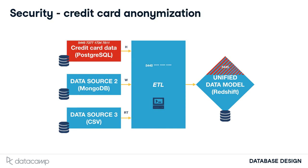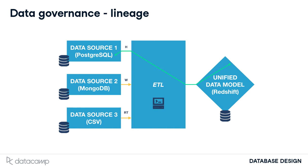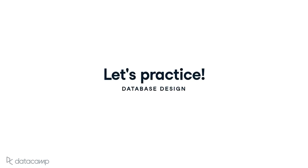For example, business analysts using the unified data model should not have access to credit card numbers. You should anonymize the data during ETL so that analysts can only access the first four numbers to identify the type of card being used. For data governance purposes, you need to consider lineage — for effective auditing, you should know where the data originated and where it is used at all times. Now it's your turn to practice the ins and outs of data.